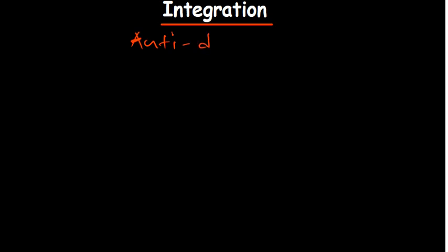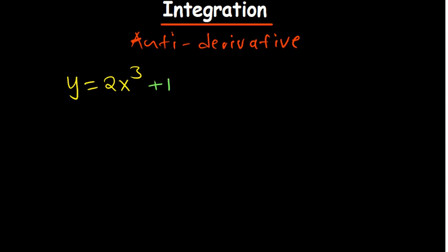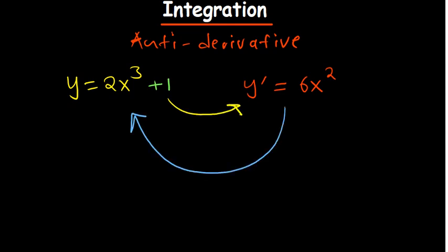When you hear the word anti-derivative, don't be confused — just know that it is the opposite of differentiation. For example, if you have a function y = 2x³, and you determine the derivative of this function, it is going to be equal to 3 times 2, which is 6, and then x squared. The constant goes away, so this is differentiation.